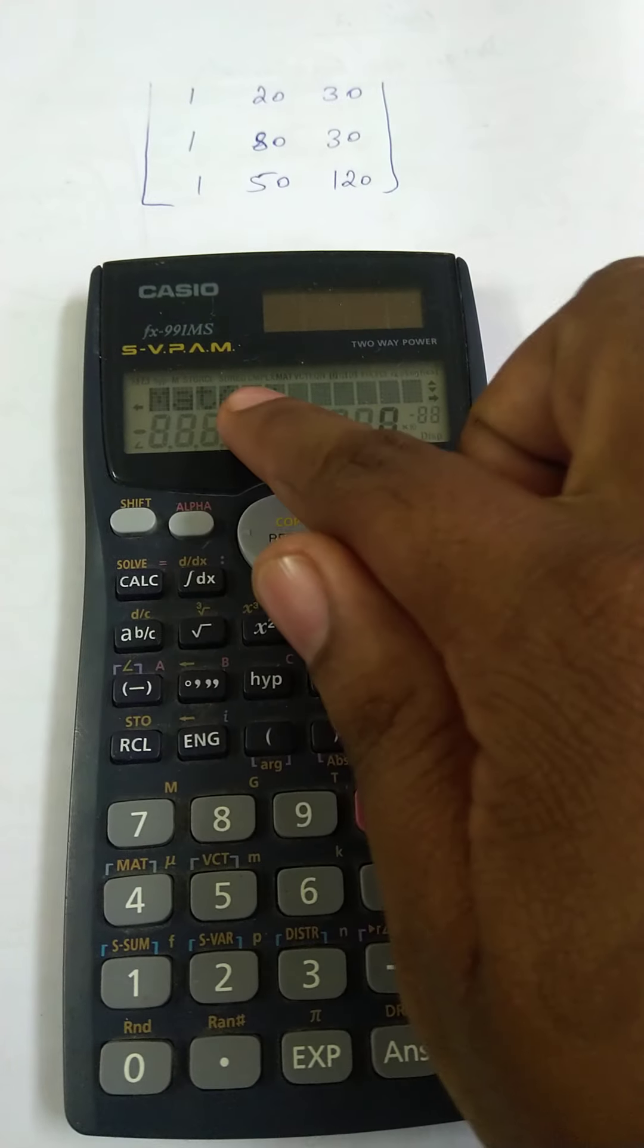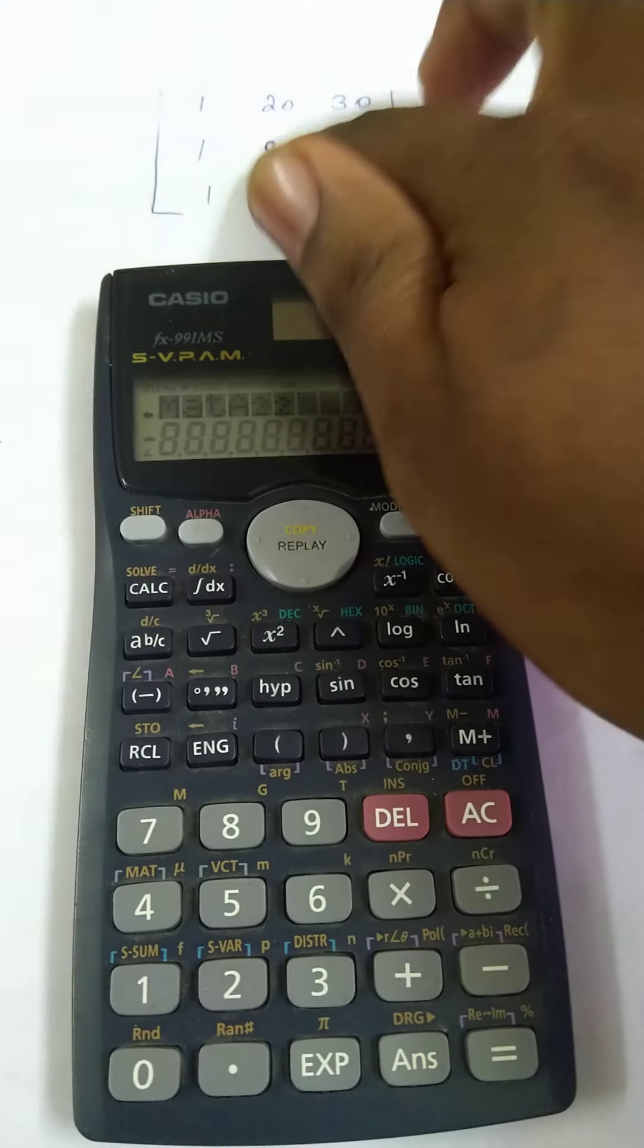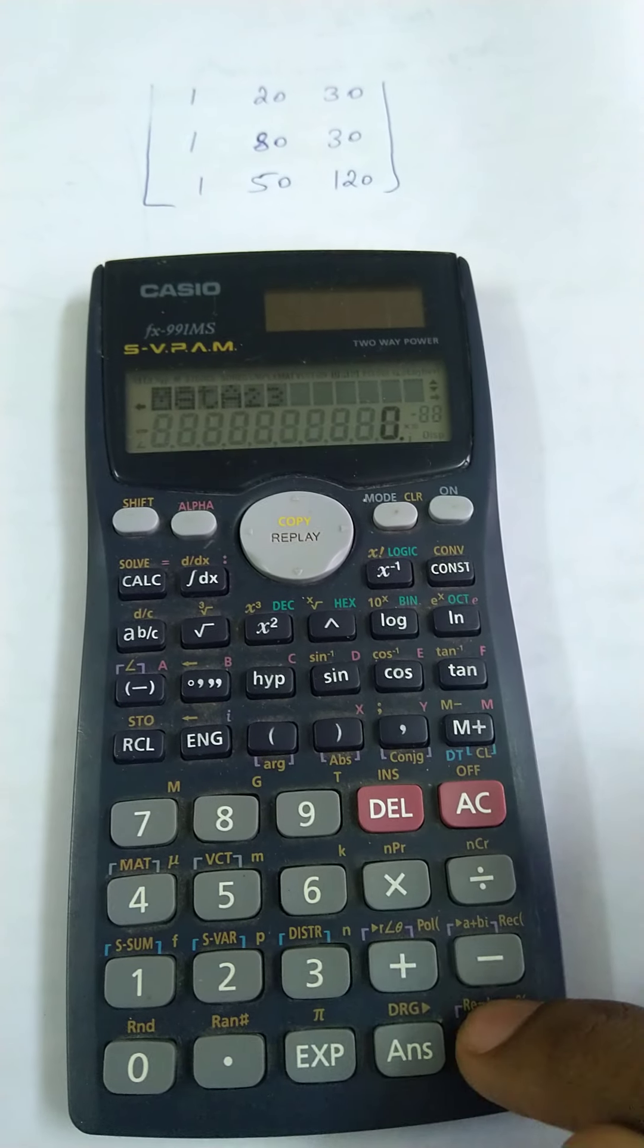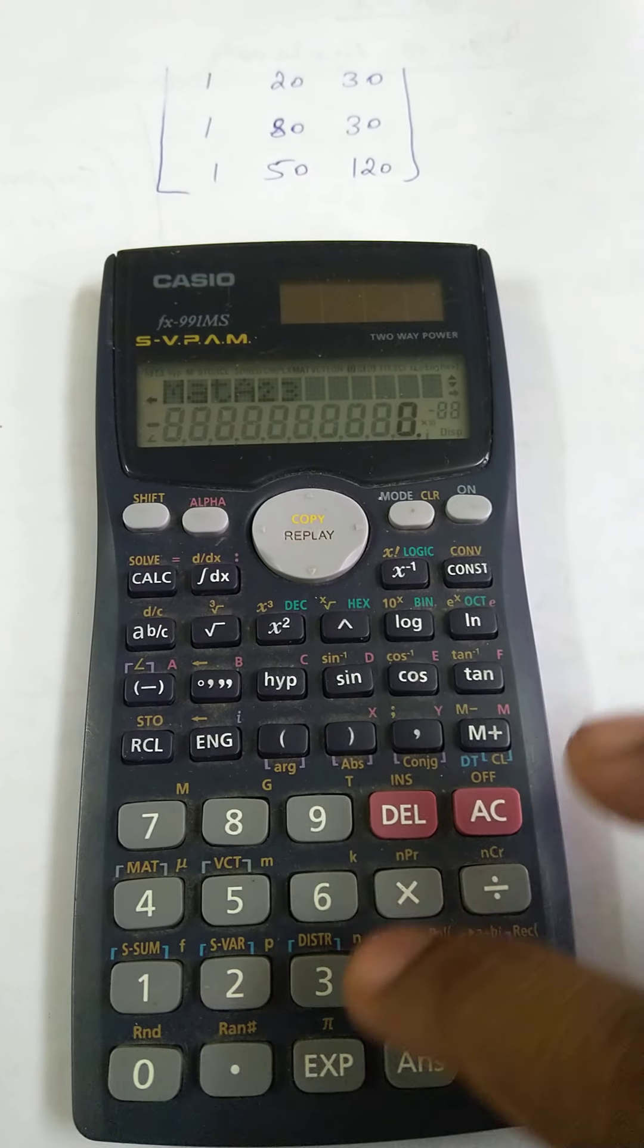A21 equals 1. A22 equals 80, press equal. A23 equals 30.